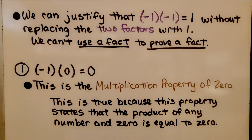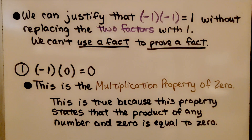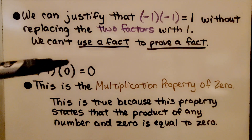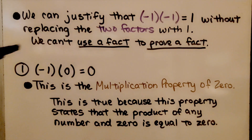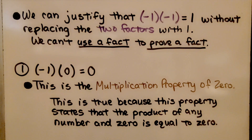We can justify that negative 1 times negative 1 is equal to 1 without replacing the two factors with a 1 — we can't use a fact to prove a fact. So, for our first step, we have negative 1 times 0 is equal to 0. This is the multiplication property of zero, which states that the product of any number and 0 is equal to 0.